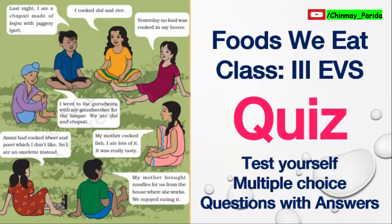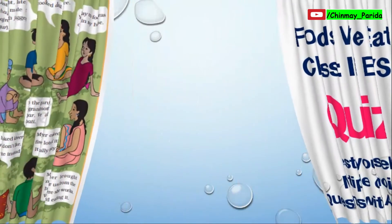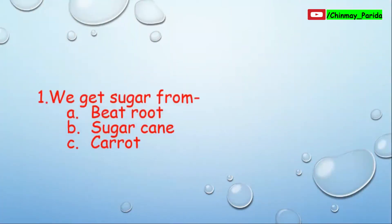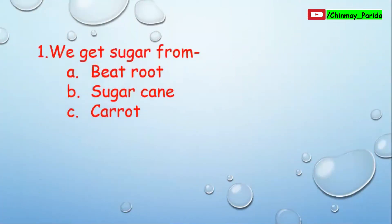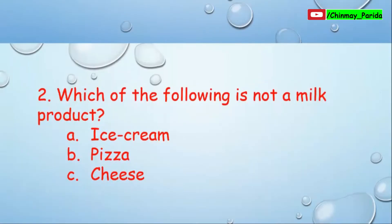Without any delay, let's start today's quiz. Question number one: We get sugar from — option A: beetroot, option B: carrot and sugarcane, option C: carrot. It's a very easy question — we get sugar from sugarcane.